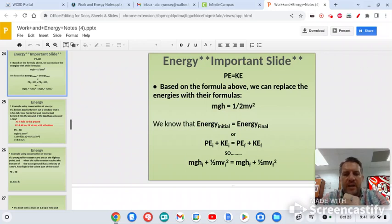So based on the formula above, we can replace energies with their formulas. So remember the formula for potential energy is mass times gravity times height. Remember the formula for kinetic energy, 1/2 times mass times velocity squared. So overall, if potential energy equals kinetic energy, then mgh = 1/2mv². So we know energy initial and energy at the final is the same. So then also, PE initial plus KE initial is going to equal PE final and KE final. It's just different ways of using these two formulas together. They all equal the same things. So what we're going to do today is we're going to work on this section here, just the PE versus KE.